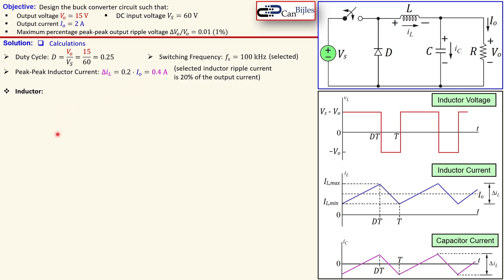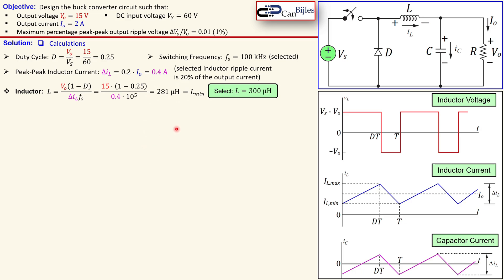The value of the inductor is given by an expression involving the output voltage, the duty cycle, the switching frequency, and the peak-to-peak inductor current. Substituting the values yields 281 microhenries. This is the minimum inductor value needed to stay in continuous current mode. To have some safety margin, we select a slightly larger value — in this case 300 microhenries.